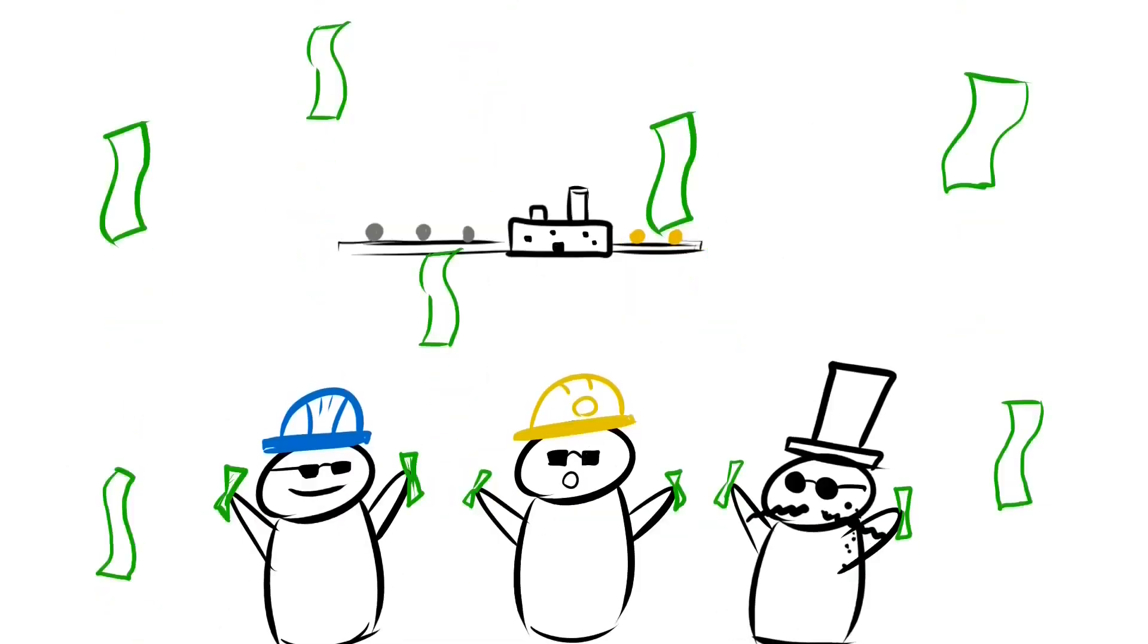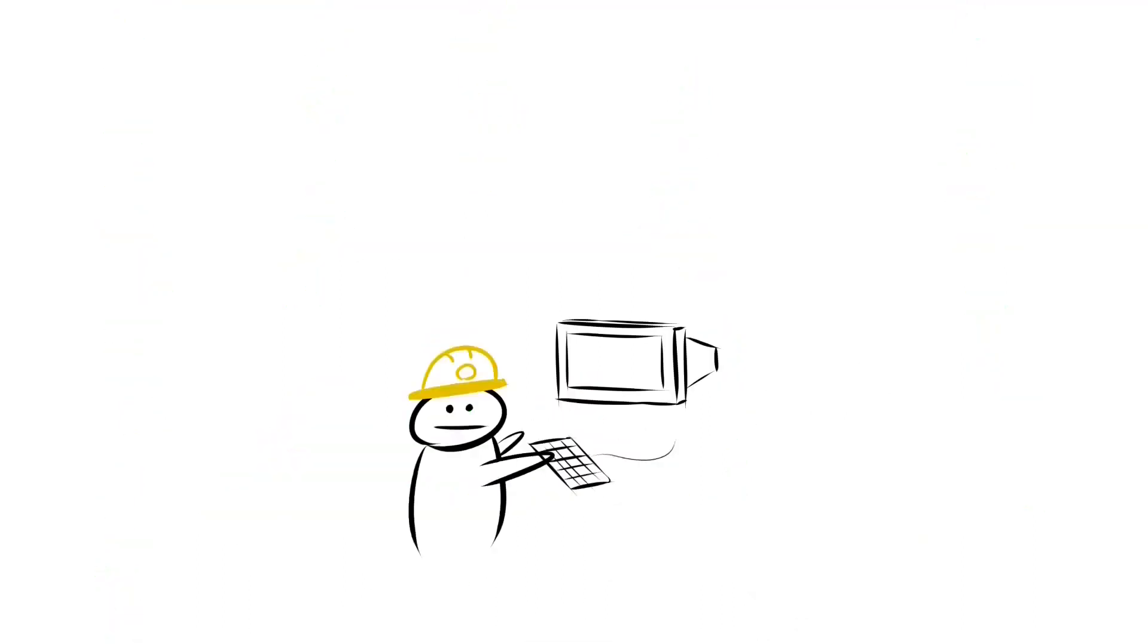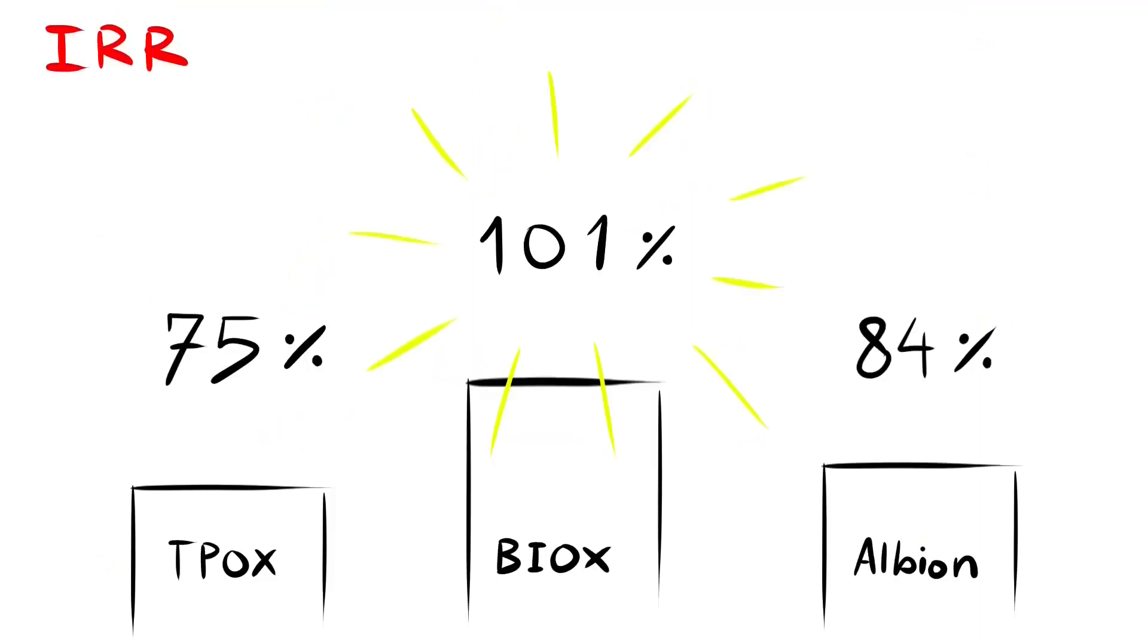In conclusion, the engineers at HydroMet Insight Solutions have used mass and heat balances combined with cash flow analysis to model the economic viability of three different pretreatment processes. While there's still much work to do, they have determined that the BIOX process is most economically viable at this point.